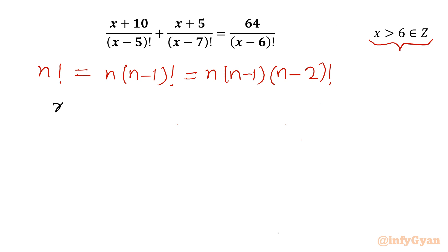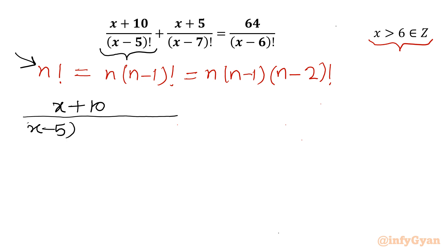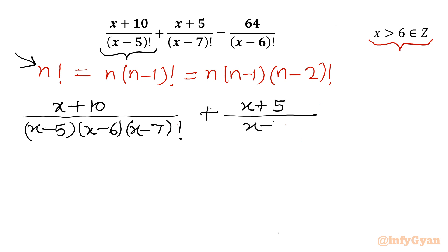I will rewrite (x-5)! by expanding: (x-5)! = (x-5)(x-6)(x-7)!. So the first term becomes (x+10) / [(x-5)(x-6)(x-7)!]. The second term is (x+5) / (x-7)!, and the right-hand side is 64 / [(x-6)(x-7)!].